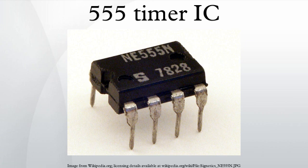The IC was designed in 1971 by Hans Camenzind and signed under contract to Signetics, which was later acquired by Philips. Depending on the manufacturer, the standard 555 package includes 25 transistors, two diodes and 15 resistors on a silicon chip installed in an 8-pin mini dual-in-line package. Variants available include the 556, 558, and 559.